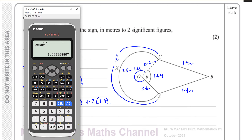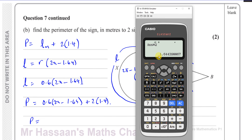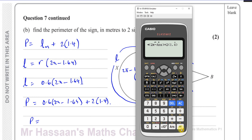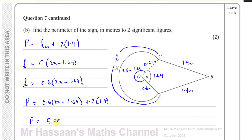I'll compute this using the exact stored value of theta in the calculator: 0.6 × (2π − ans) + 2 × 1.4. This gives 5.5832 metres. To two significant figures, the perimeter is 5.6 metres.